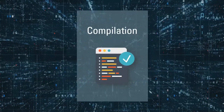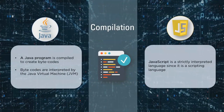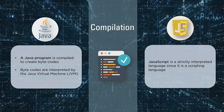Next up is compilation. Java is both compiled and interpreted. Every Java program is first compiled to bytecode, which the Java runtime environment understands. These bytecodes are then interpreted by the Java Virtual Machine, making it an interpreted language as well. On the other hand, JavaScript is a strictly interpreted language — every instruction in the program is interpreted and checked for bugs. So Java is both compiled and interpreted, while JavaScript is strictly interpreted.